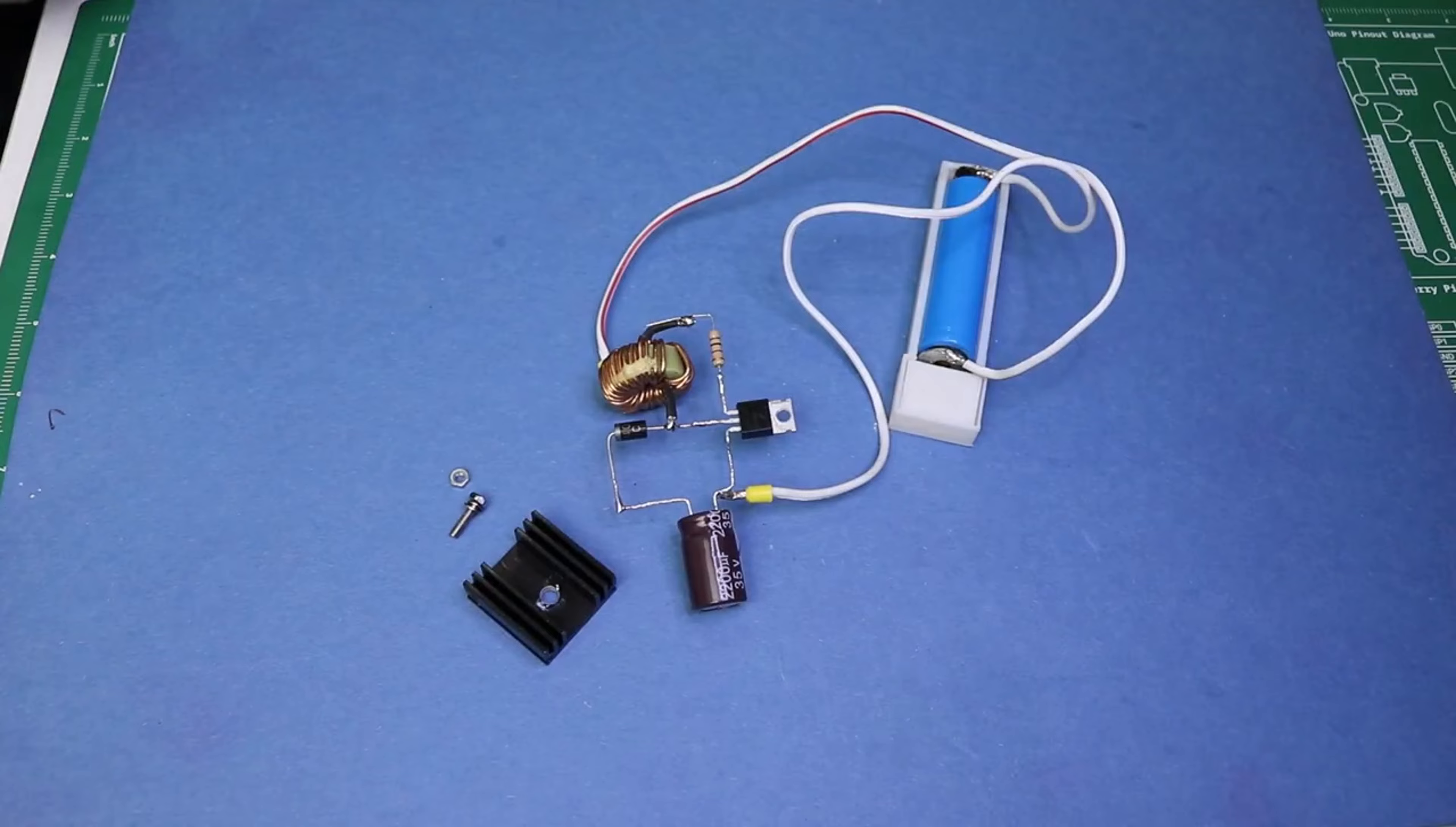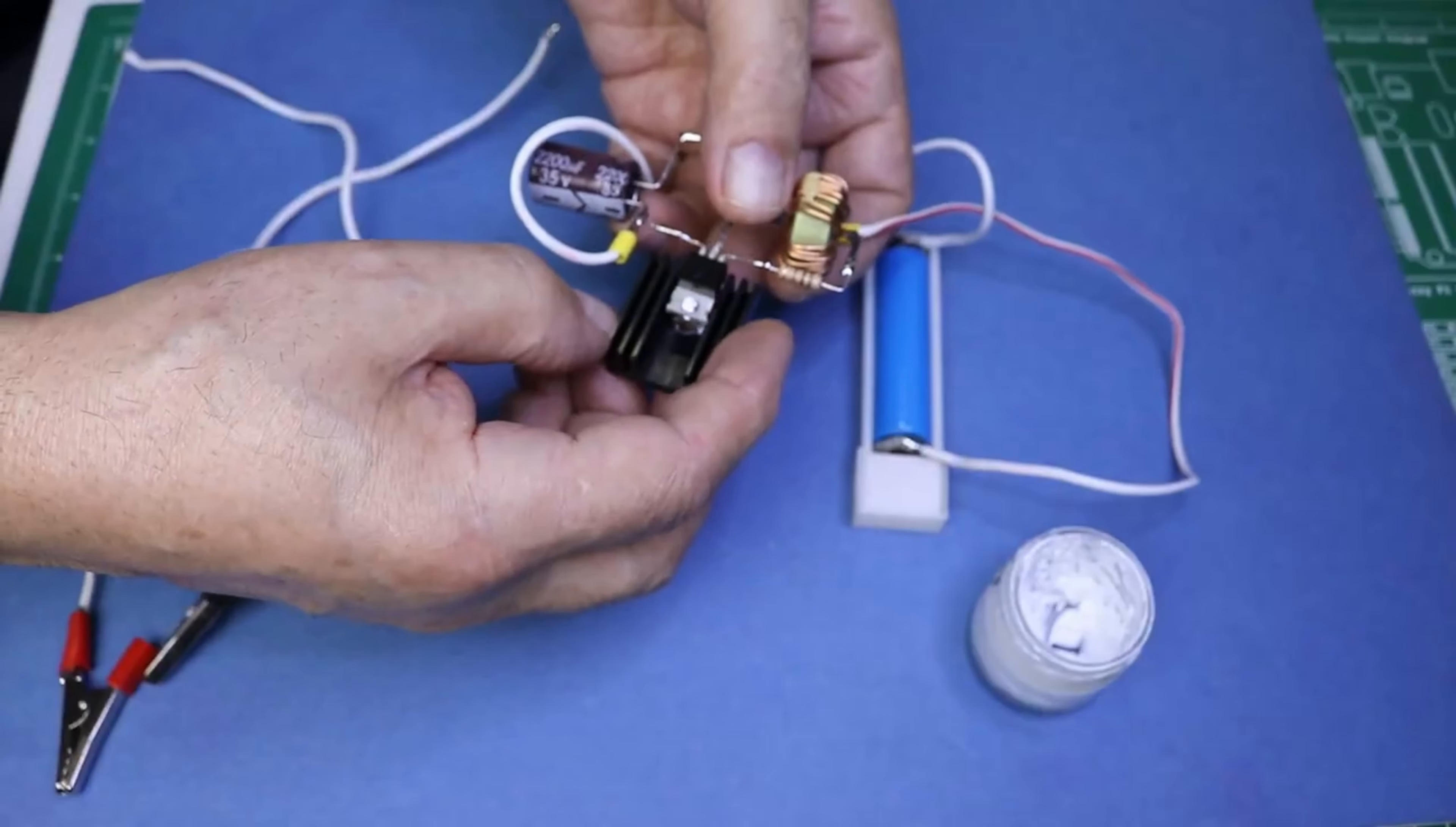Connect the coil. Solder the coil onto the circuit. The coil will act as an inductor in the boost circuit.